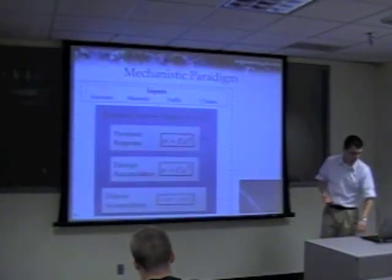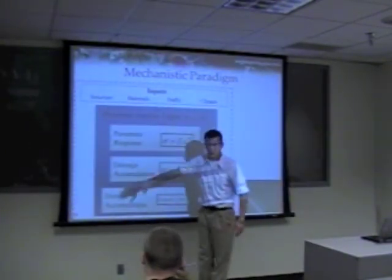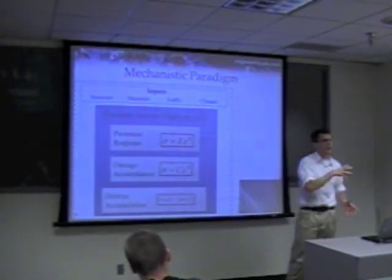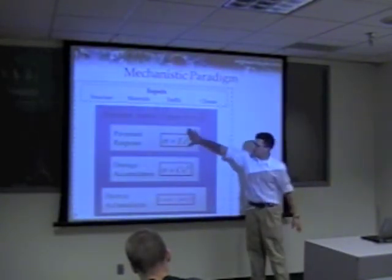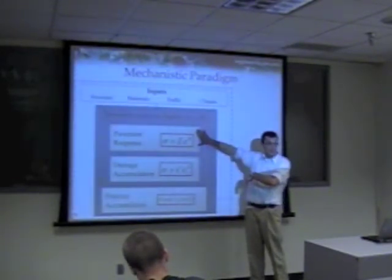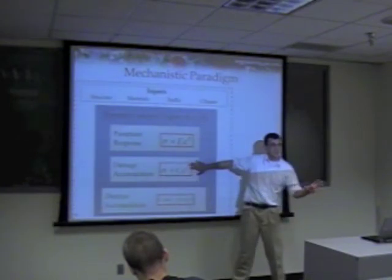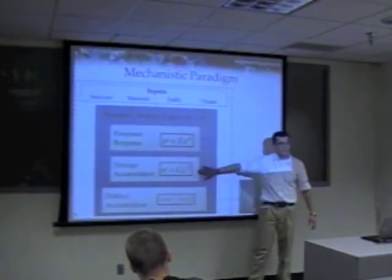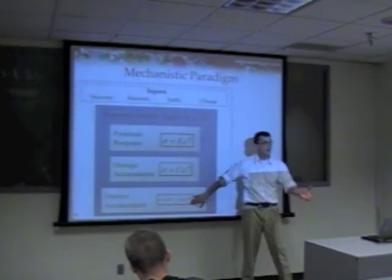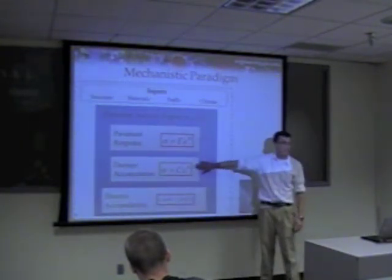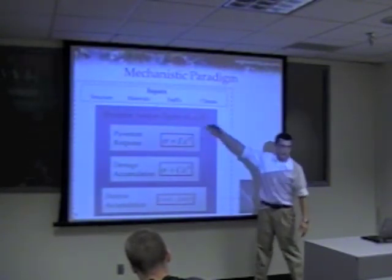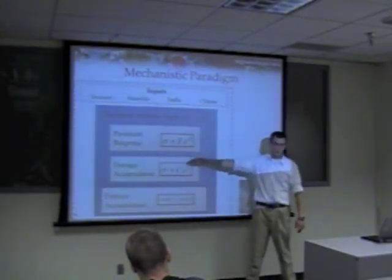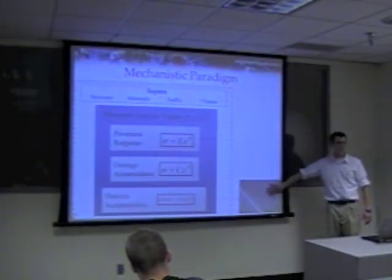A more mechanistic approach puts everything under one framework: a pavement analysis engine driving all computational aspects. We compute pavement response using a constitutive relationship, then look at damage accumulation using the constitutive law for damage rather than a simple summation, and then accumulate distresses as a function of that damage. This repeats hour by hour, day by day, for the entire pavement life — up to 20 years — until the pavement performance is predicted.